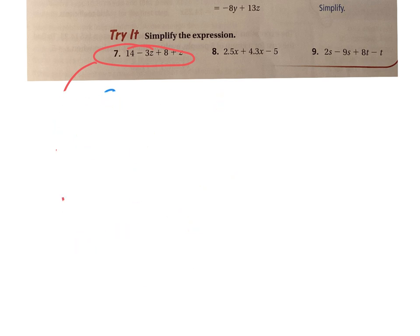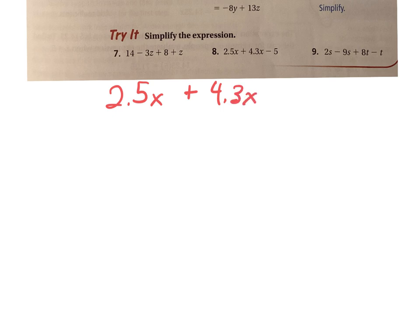I'm going to rewrite it so that it's all positive so I can figure out my terms. 2.5x plus 4.3x minus 5 — I want to add a negative 5. My terms are 2.5x, 4.3x, and negative 5. Those are my three terms.